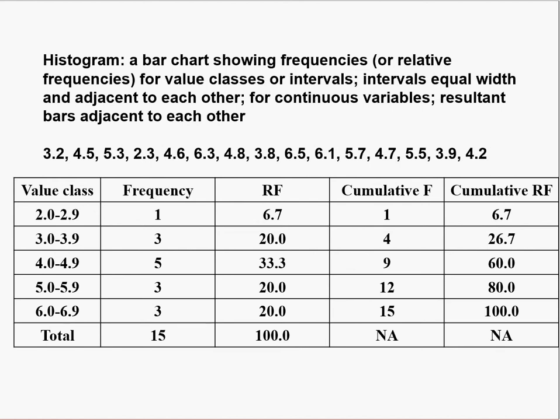Now we come to the concept of a histogram. A histogram is a type of bar chart used to show the frequency distribution for a continuous variable. For example, here we have a continuous variable — perhaps the number of minutes people wait at a bus stop — which includes decimal values.